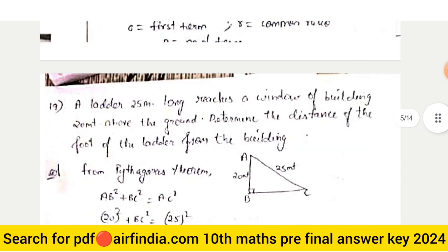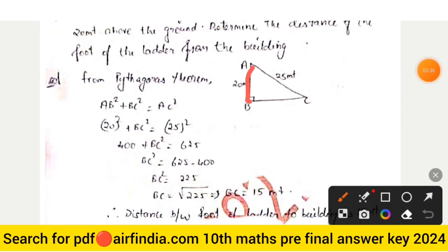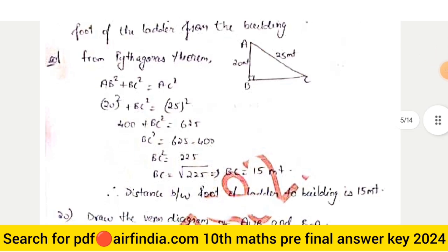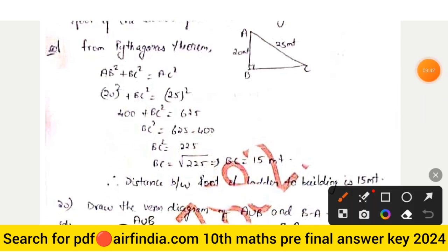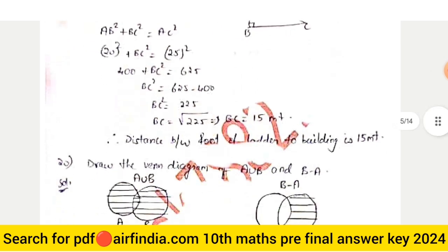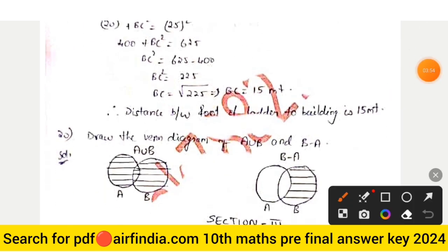Question number 19: using the diagram with values 25 and 20, apply Pythagoras theorem. AB² + BC² = AC²; 20² + BC² = 25²; so BC = 15 meters. The distance between the foot of the ladder and the building is 15 meters.